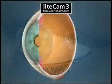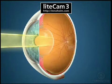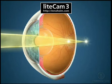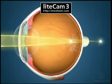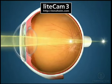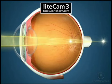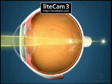Astigmatism is a refractive error in which light rays entering the eye do not focus onto a single point needed for clear vision. Instead, light focuses on two distinct points, neither of which may be on the retina. Where these images focus depends on whether the astigmatism is associated with myopia or hyperopia.